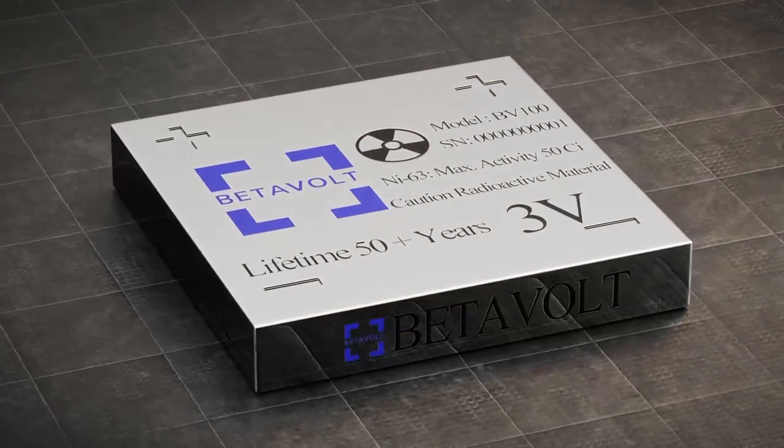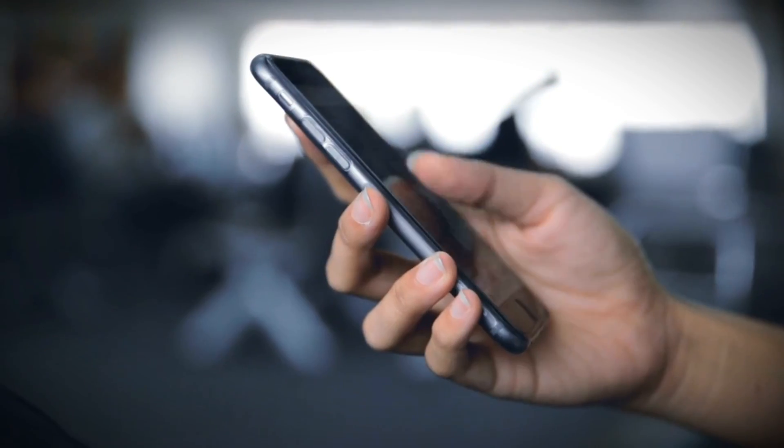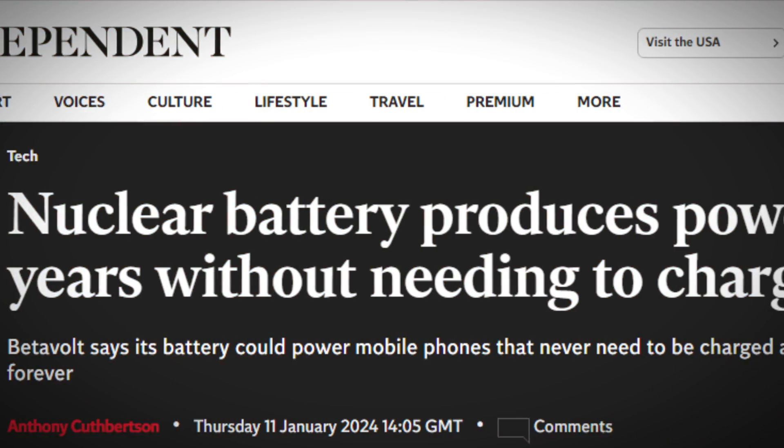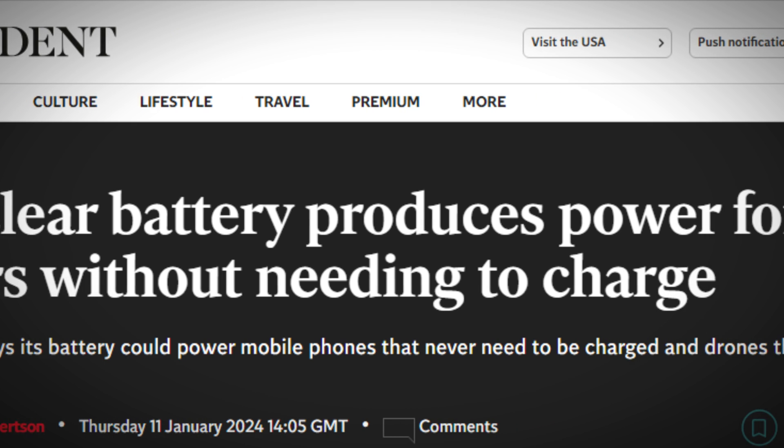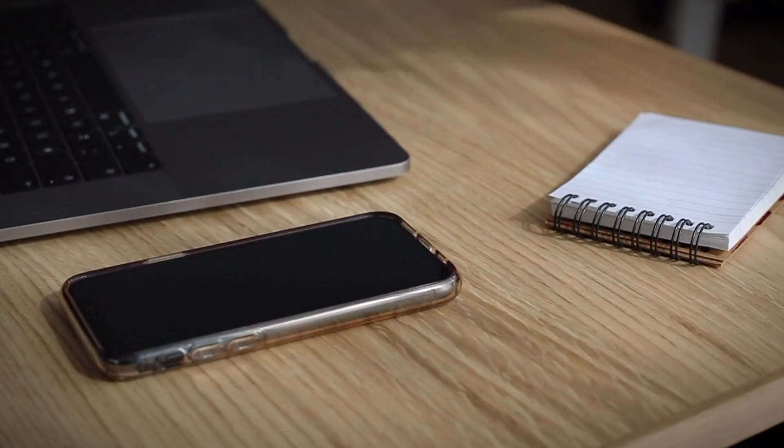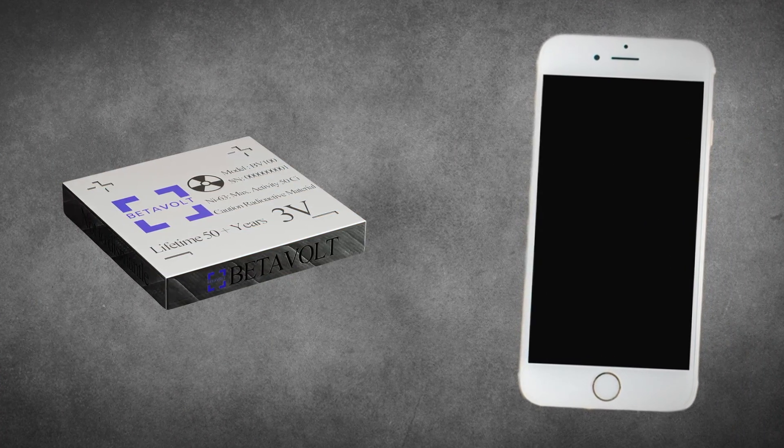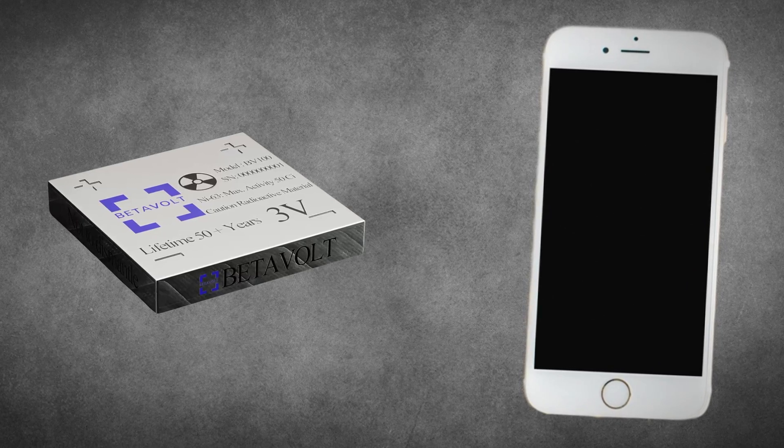Some of the potential applications of Betavolt's battery are mobile phones. Betavolt says that its battery can power a smartphone for 50 years without affecting its performance or functionality. The battery can also be integrated with the phone's design without adding extra weight or bulkiness.